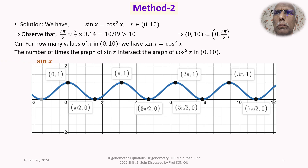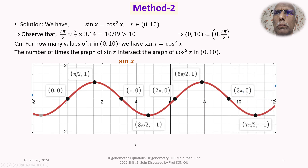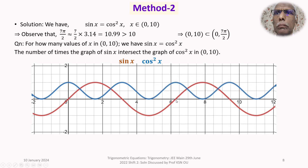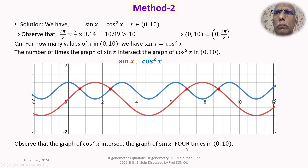Now we draw sin x and superimpose both graphs — sin x and cos²x — together. We identify the points of intersection: the first, second, third, and fourth intersection points within the open interval (0, 10). The graph of sin x intersects the graph of cos²x exactly four times in (0, 10). Therefore, the number of solutions of sin x = cos²x in (0, 10) is 4.